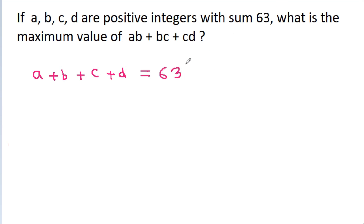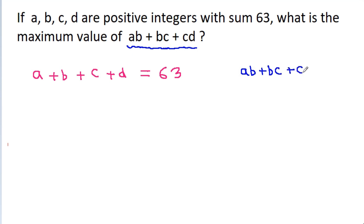We have to find the maximum value of ab + bc + cd. Note that this expression is not symmetrical. If we also had the term da, then it would be symmetrical — but da is missing here.